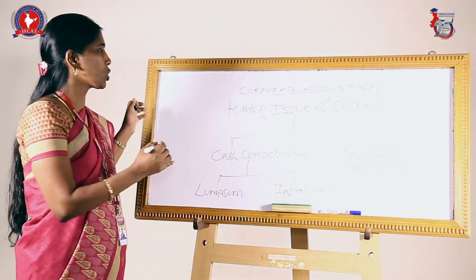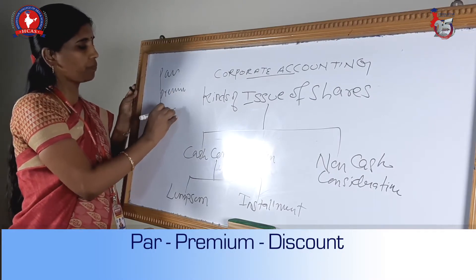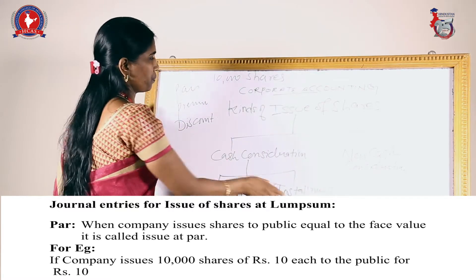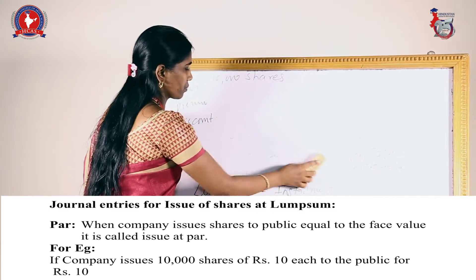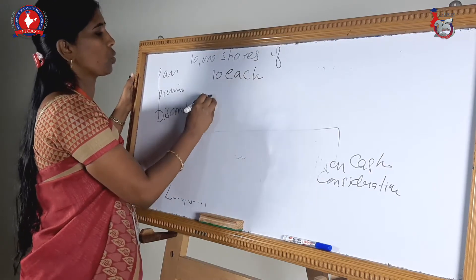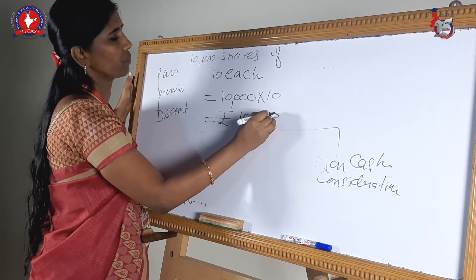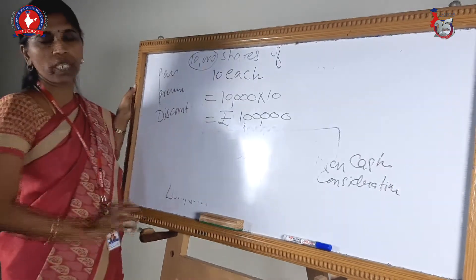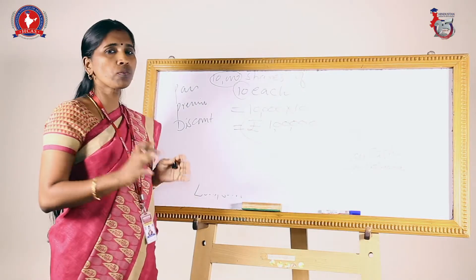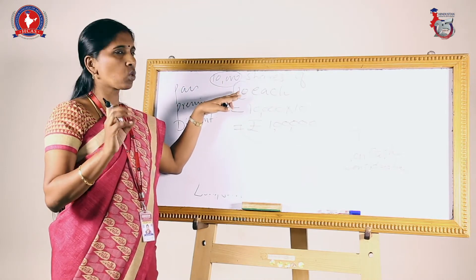When shares are issued, they can be issued at par, at premium, or at discount. For example, if there are 10,000 shares of rupees 10 each, then 10,000 into 10 gives a capital of one lakh. So 10,000 is the number of shares, 10 rupees is called the face value, and one lakh is called the share capital. To raise capital of one lakh, the company issues to the public in small denominations, which are called shares, and 10 rupees is the face value.